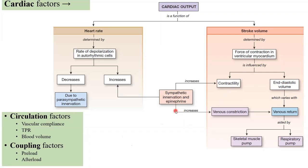There's a third sympathetic mechanism: veins function as blood reservoirs, storing unstressed volume. Sympathetic activation vasoconstricts the veins, pushing that stored blood back toward the heart, enhancing venous return, increasing EDV, and thus increasing force of contraction and stroke volume. So sympathetics enhance cardiac output through three routes: heart rate, contractility, and venous return via venoconstriction.